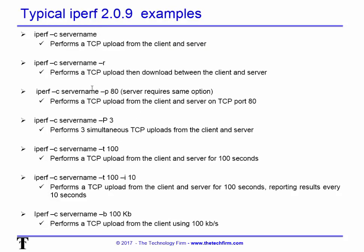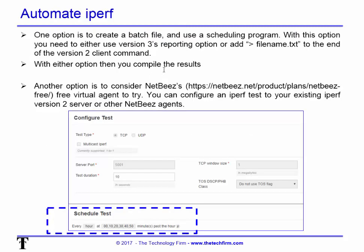Here's a collection of typical iPerf commands you might want to reference — I'll include these in the write-up so you can copy and paste them easily. If you want to automate iPerf, one way is to put the iPerf command in a batch file, use Windows Task Scheduler, or whatever you prefer. You can then collect all the output and compile your results.